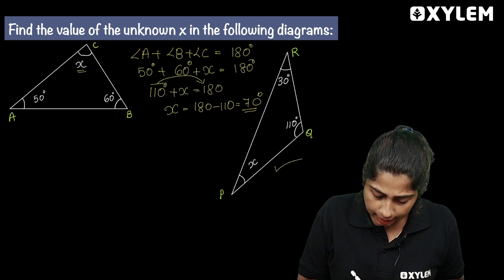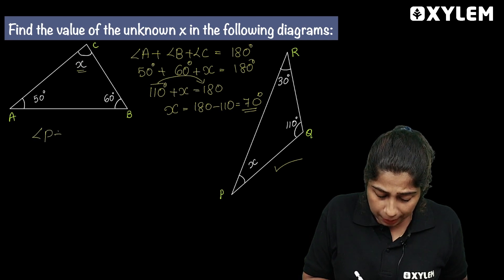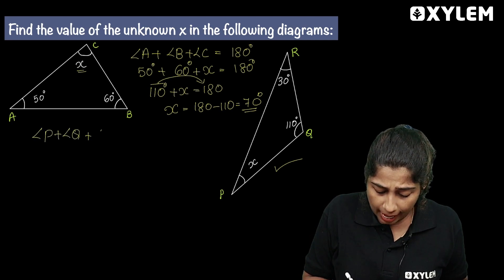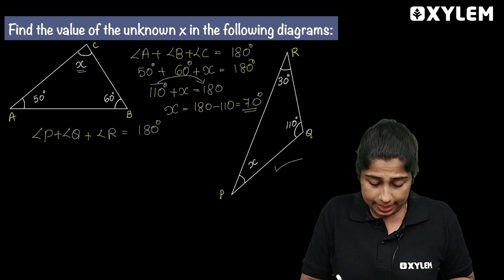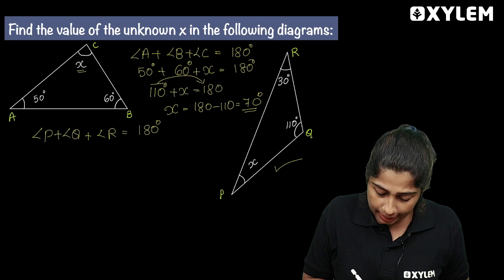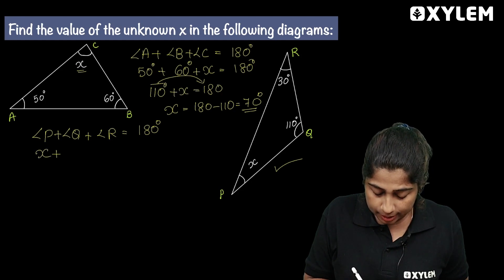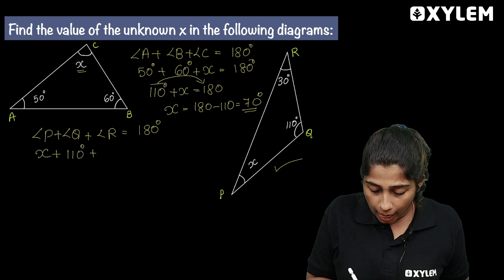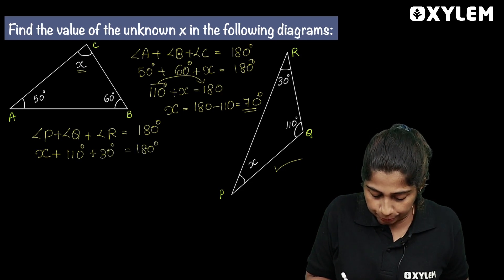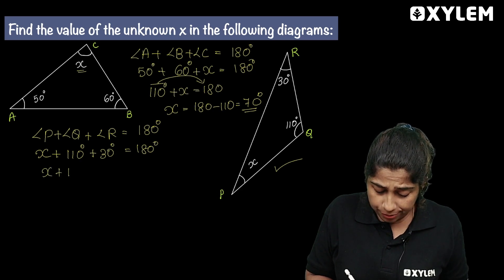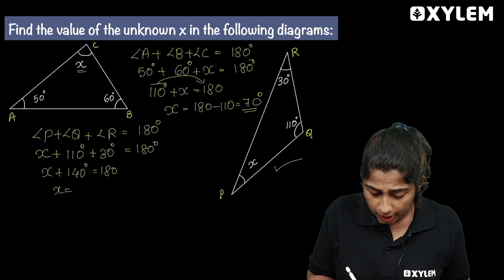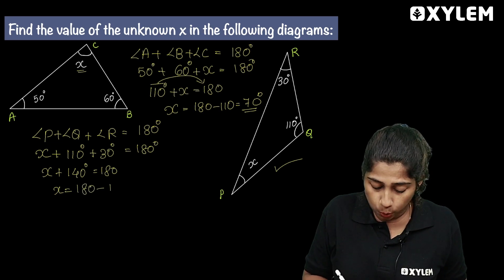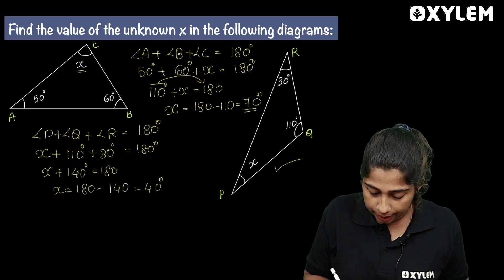Second question. Angle P plus Angle Q plus Angle R is equal to 180 degrees. Angle P is equal to 180 degrees minus the other angles, and that is equal to 40 degrees.